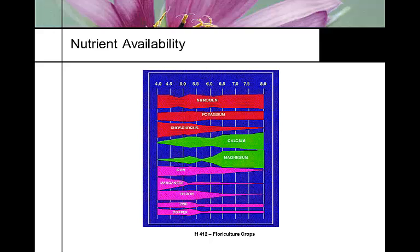This classic graph — which has been around for decades — shows pH ranging from 4 to 8, the general range of most native soils and most plants. Plants have evolved around these generic pH ranges. At high pH (above 7), many micronutrients tend to be less available, while calcium and magnesium are highly available. As pH drops lower, availability changes. Plants have evolved right where most nutrients are readily available.